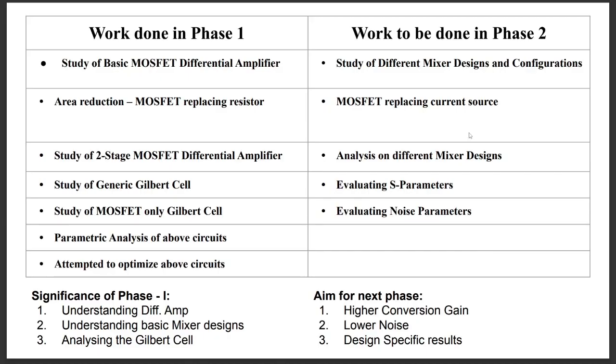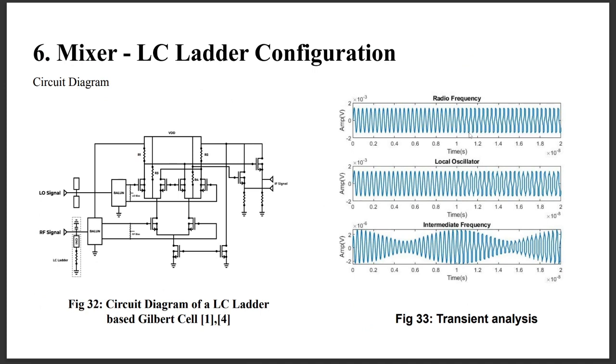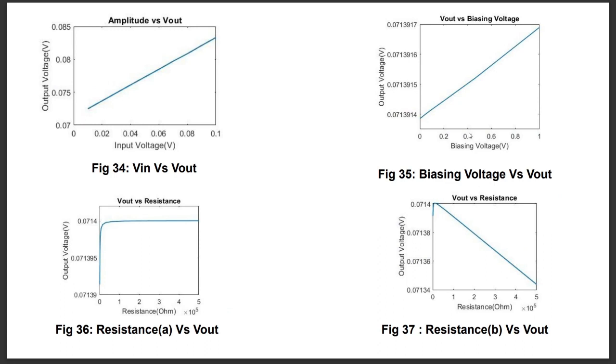These are the comparisons for phase 1 and phase 2. So for phase 2, we have first done the LC ladder configuration. This is the circuit design and this is the initial transient analysis. Then these are some of the parametric analysis that we have run over it.